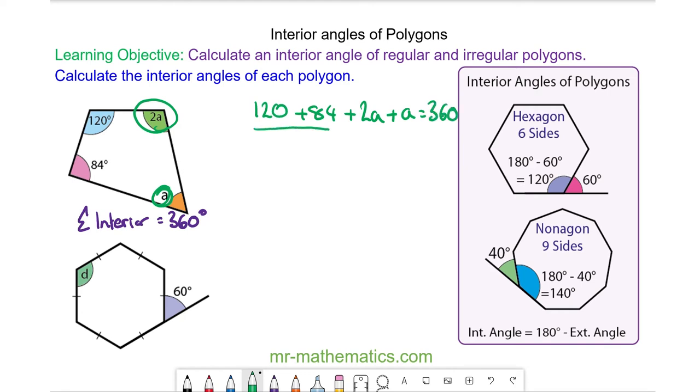120 plus 84 is 204 plus 2A plus A which is 3A equals 360. We can take away 204 from both sides. So these will cancel.